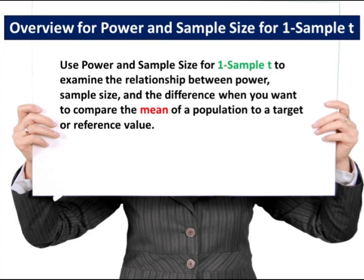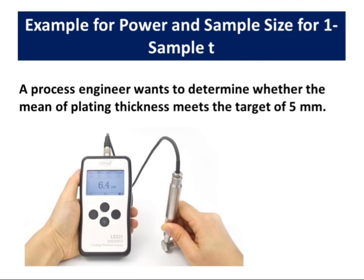Use power and sample size for one sample t to examine the relationship between power, sample size, and the difference when you want to compare the mean of a population to a target or reference value. For example, a process engineer wants to determine whether the mean of plating thickness meets the target of 5 millimeters.